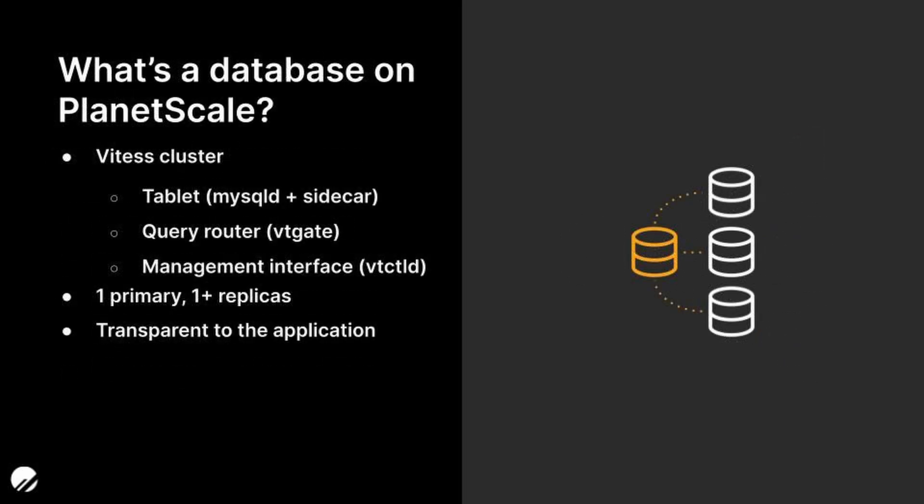It's designed to speak the MySQL protocol, so when applications connect to a Vitesse cluster they're actually connecting to VTGate, which then routes traffic to the clusters where the requested data lives. Whenever a new database in PlanetScale is created it is actually creating a Vitesse cluster behind the scenes, which contains three components: a tablet (a MySQL instance plus a sidecar process), a VTGate proxy, and a management interface used by PlanetScale to manage the entire cluster. All of this happens transparently to the application.